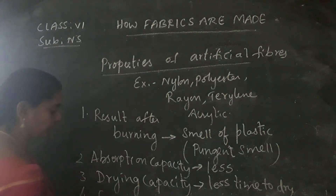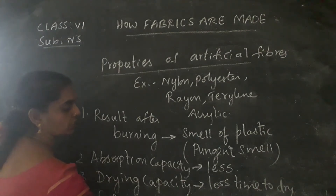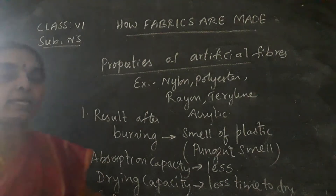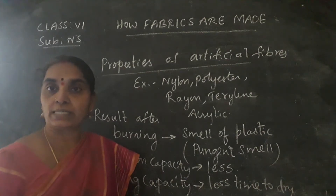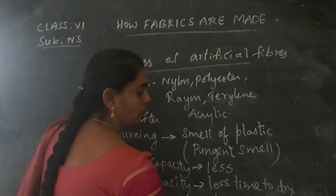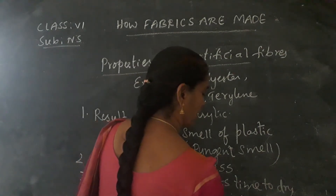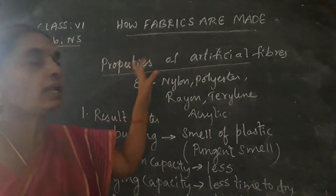Next, expansion capacity or stretching capacity. If you see the stretching capacity of artificial fibers, it is very, very less. They cannot be stretched at all — no stretching capacity at all for artificial fibers.